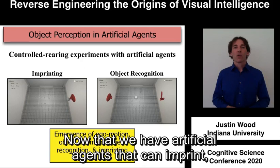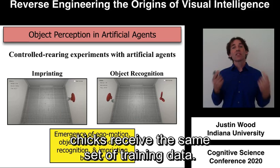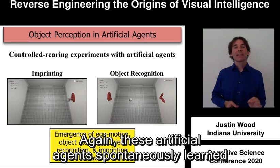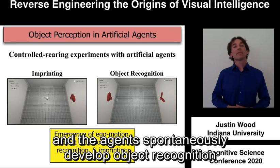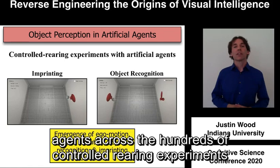Now that we have artificial agents that can imprint, we're starting to train and test the agents in virtual controlled rearing chambers, so we can ensure that the artificial agents and the newborn chicks receive the same set of training data. These artificial agents spontaneously learn to imprint, as shown on the video on the left, and the agents spontaneously develop object recognition, as shown in the video on the right. So we're now ready to compare newborn chicks and artificial agents across the hundreds of controlled rearing experiments that we've already performed in the lab.